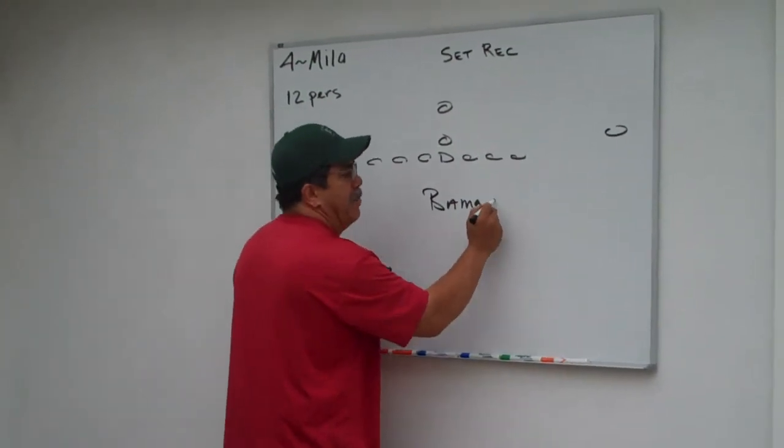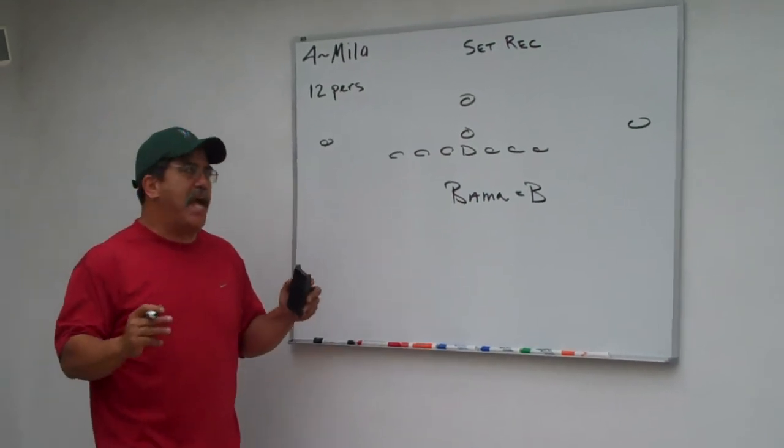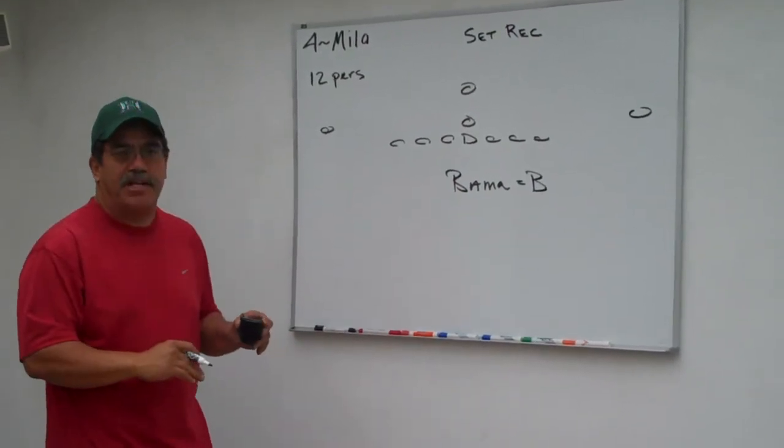we call that BAMA or the way we tag it is just a capital B. So when we see capital B, we know that's the formation that's out there.